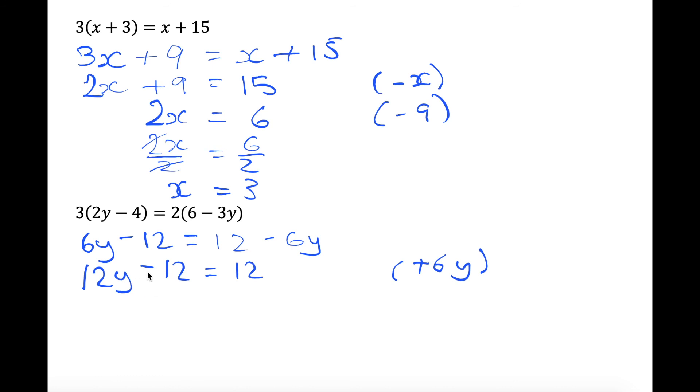Okay, so now we want to get our constants on the right side. So we're going to plus 12 because we want to get rid of this minus 12. So now we have 12y equals 12 plus 12 is 24. Here we did plus 12. So now we want to divide by 12 to get just one y. So 12y over 12 equals 24 over 12. These cancel. So we're left with y equals 2.